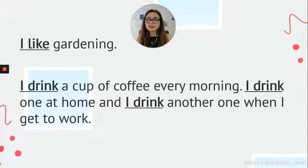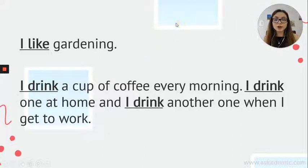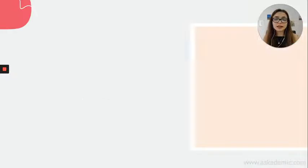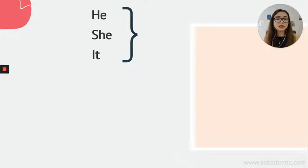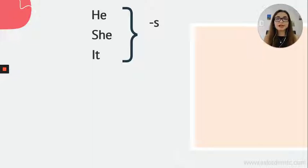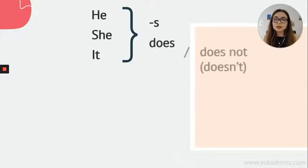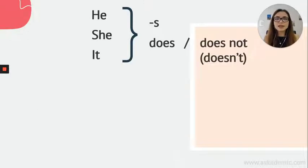So far we have just seen the subject 'I,' but what if we have the subject pronouns such as he, she, or it? When we have these pronouns as subjects, we should add an extra S to the verb, but only with positive sentences. When making a positive sentence with he, she, or it as the subject, we put an extra S. But with negative or question sentences, we should use 'does' or 'doesn't.' And of course, we change the order when making a question sentence.